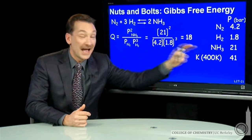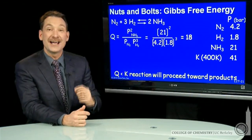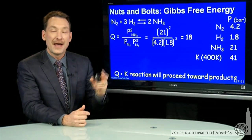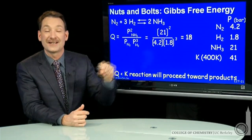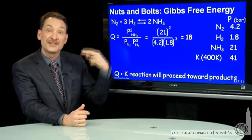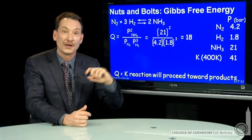18 less than 41. So Q is less than K. That means the denominator must be too big. The reactants are too big. So I'm going to proceed towards products to get Q to equal K.